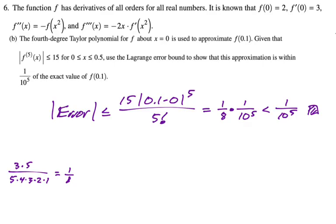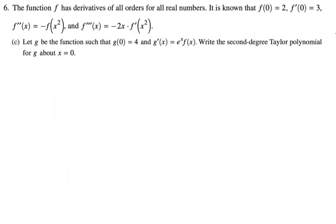Let's take a look at the next part. Let g be the function such that g(0) = 4 and g'(x) = e^x · f(x). Write the second degree Taylor polynomial for g about x equals zero.